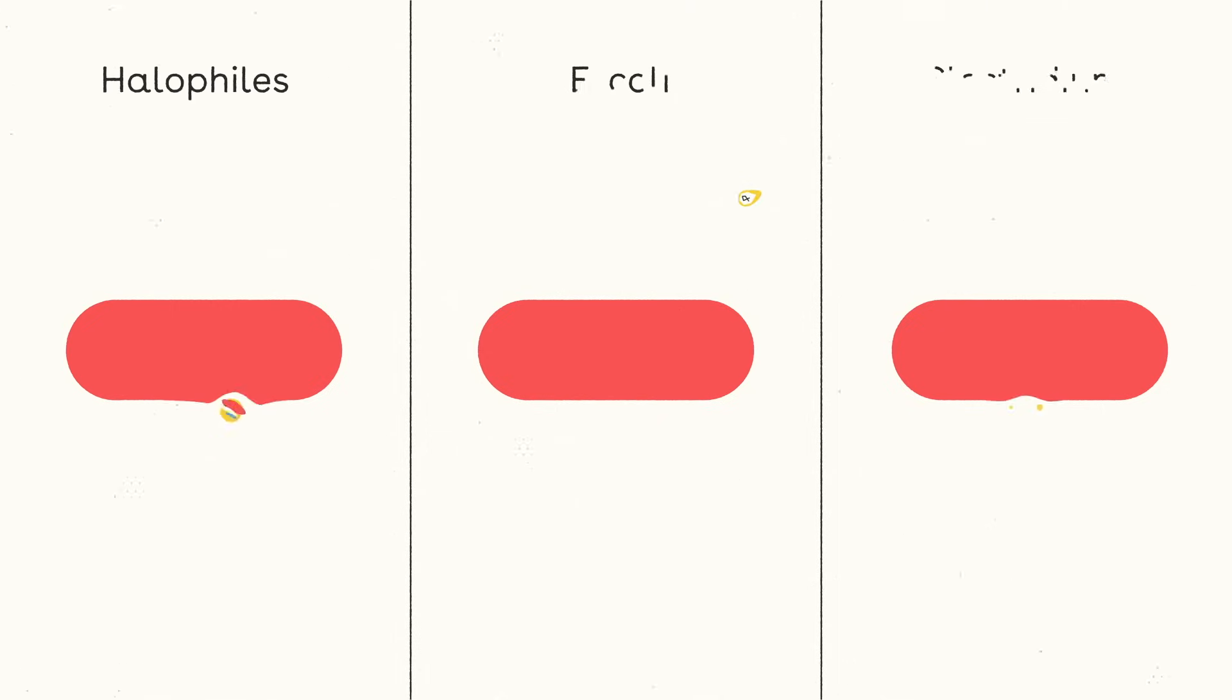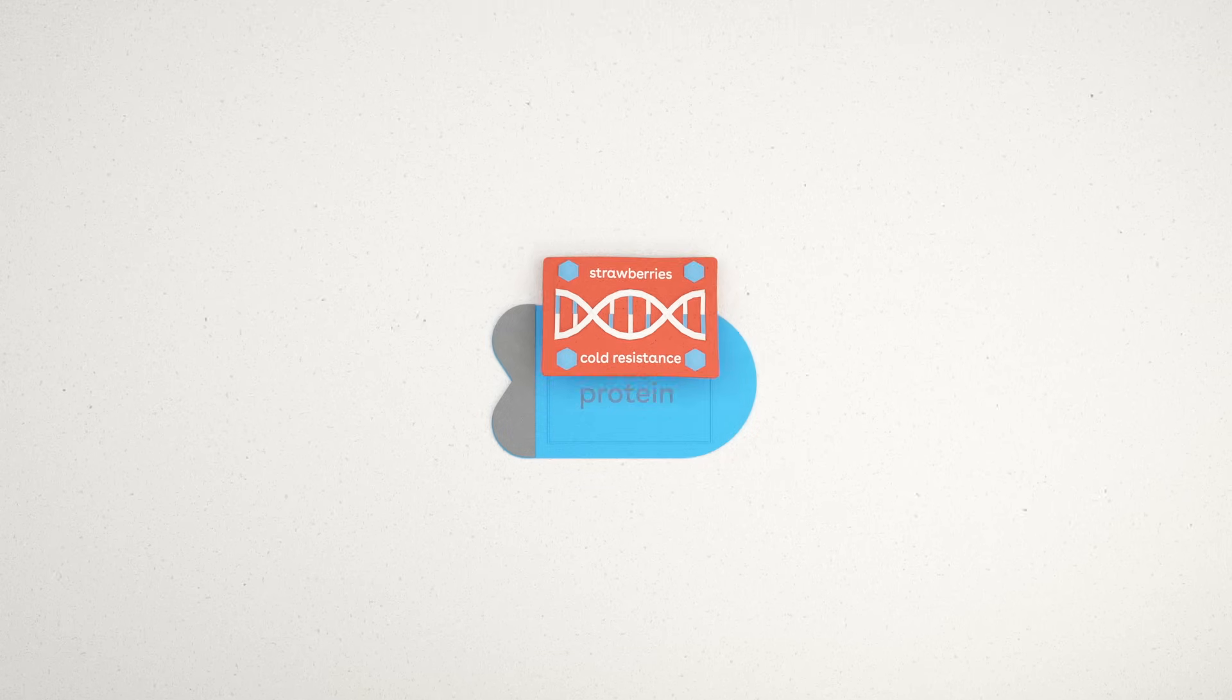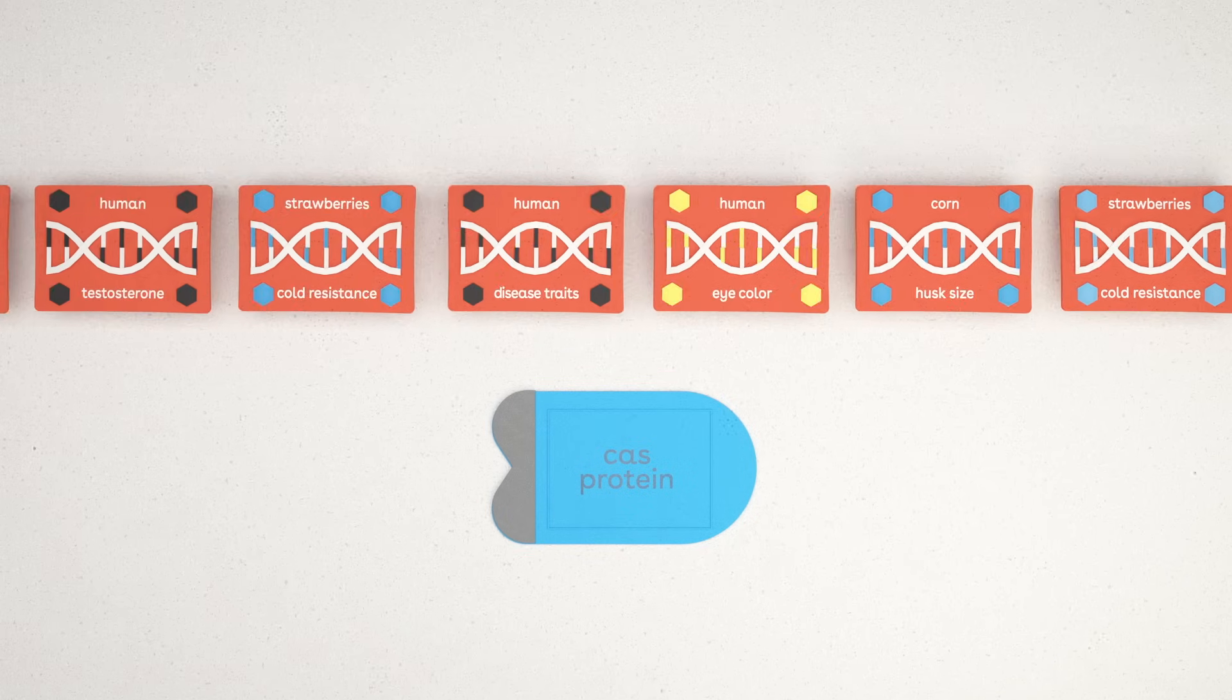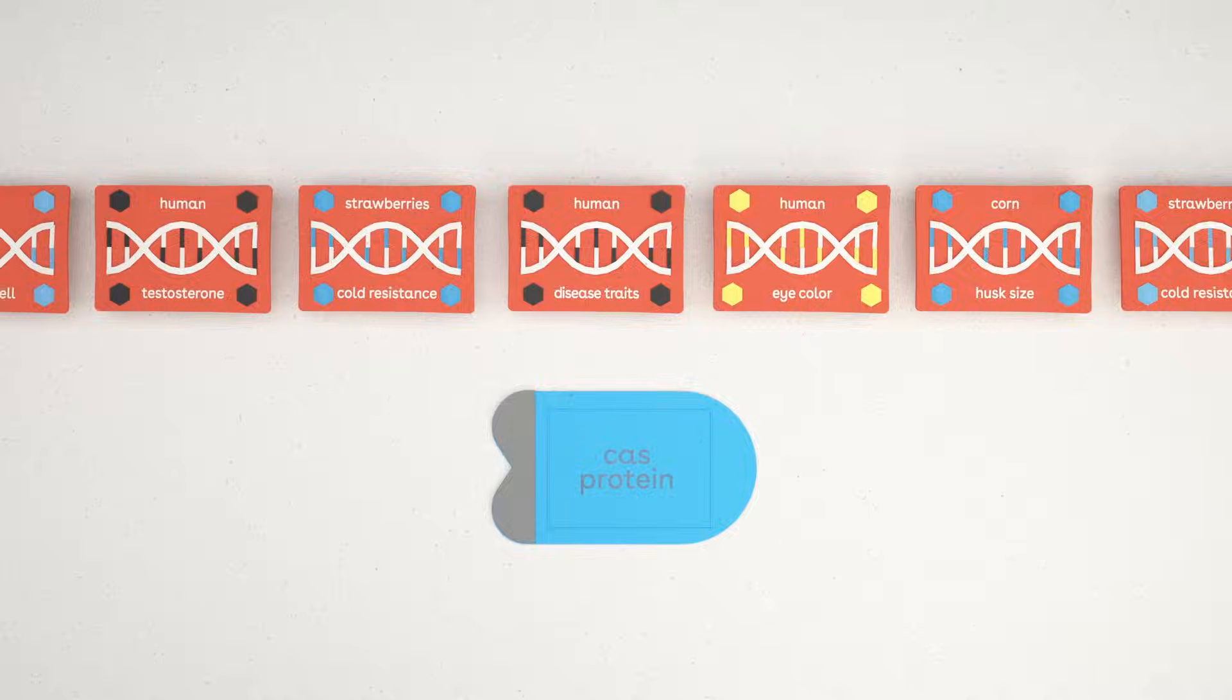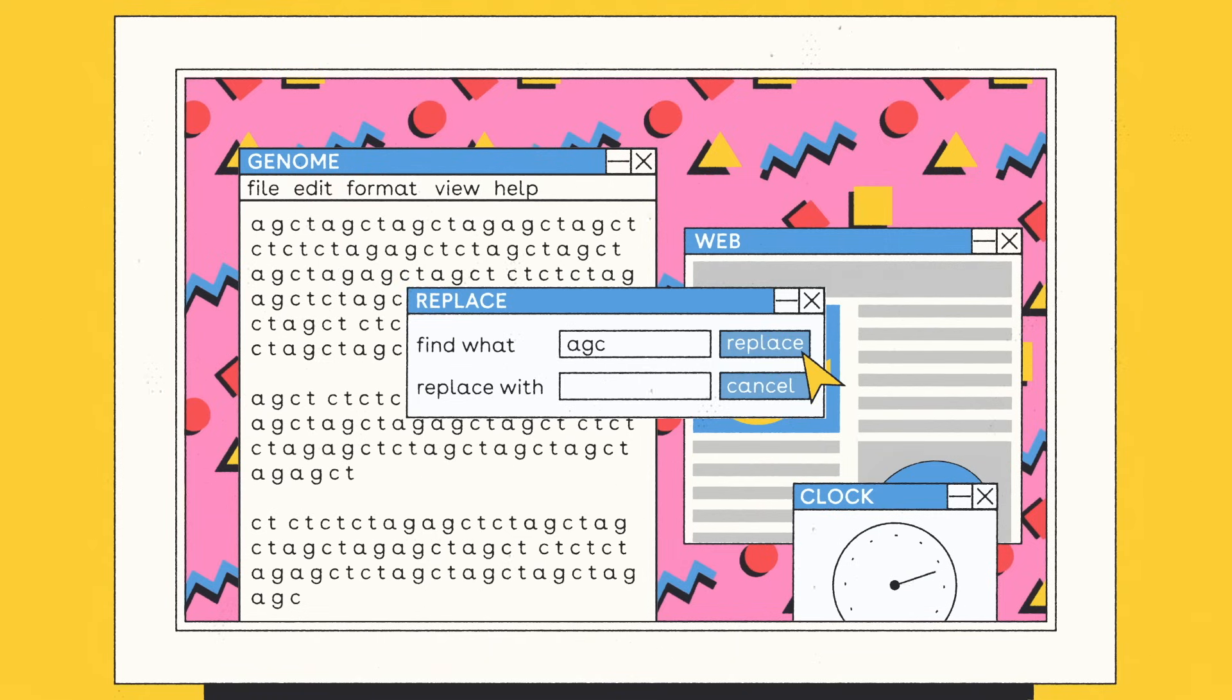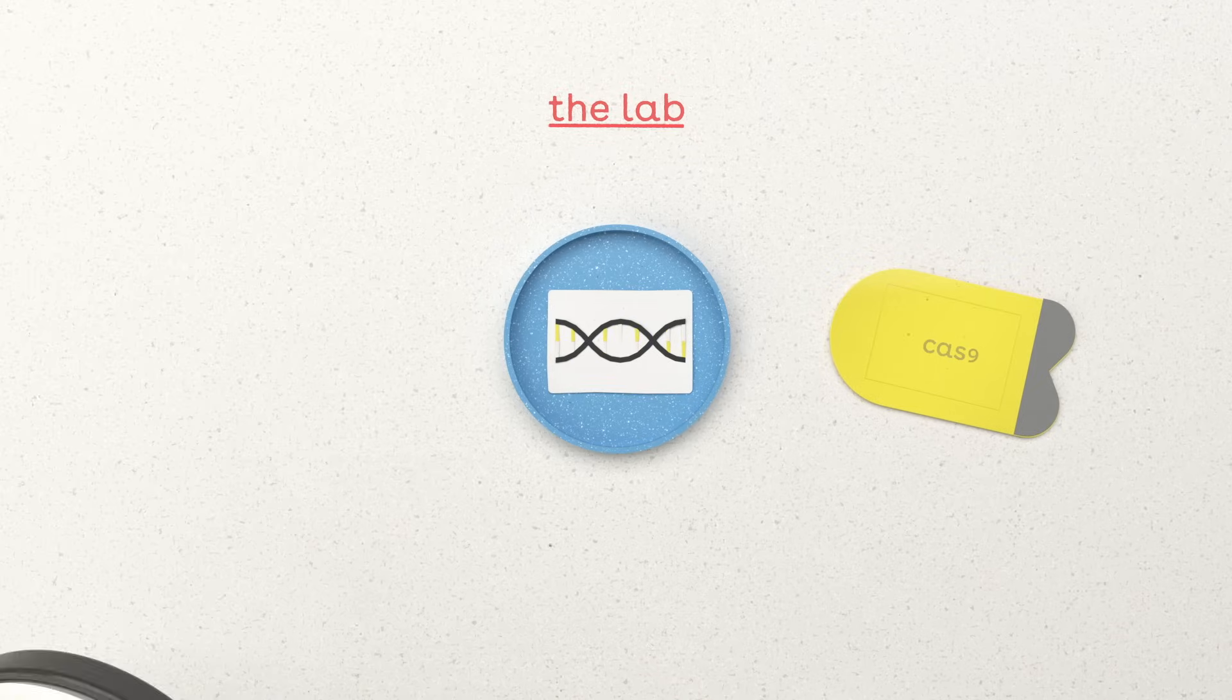Lots of bacteria have this type of defense mechanism. But in 2012, scientists figured out how to hijack CRISPR to target not just viral DNA, but any DNA in almost any organism. With the right tools, this viral immune system becomes a precise gene editing tool, which can alter DNA and change specific genes almost as easily as fixing a typo.